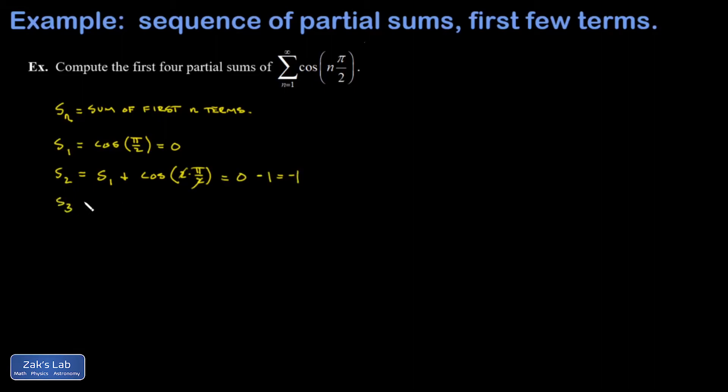Then I move on to S_3, and that'll be the previous partial sum plus the third term, cosine three pi over two, but that's zero. So S_2 was negative one, and then I add in the third term zero to that and I still have negative one.